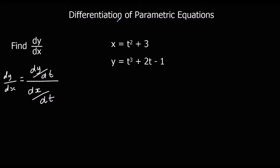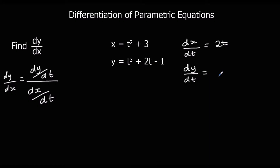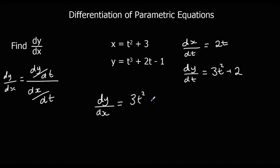All we've got to do is differentiate our two functions. So dx/dt: if we differentiate t squared plus 3, we get 2t. And dy/dt: we're differentiating t cubed plus 2t minus 1, so that would be 3t squared plus 2. To find dy/dx, we just take dy/dt, 3t squared plus 2, and divide it by dx/dt, 2t. And there we have dy/dx.